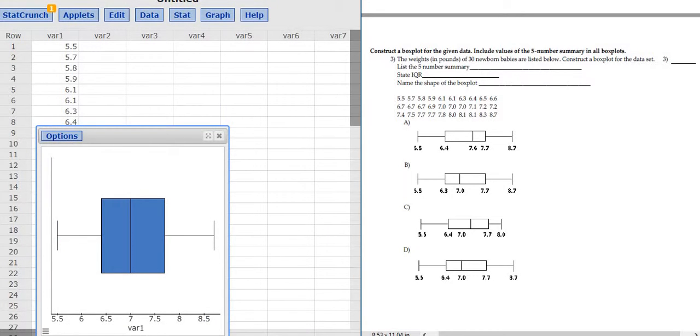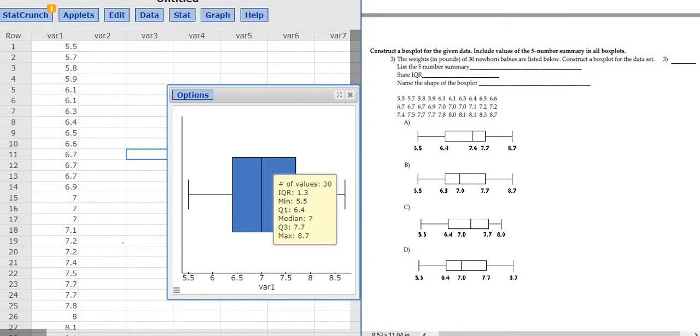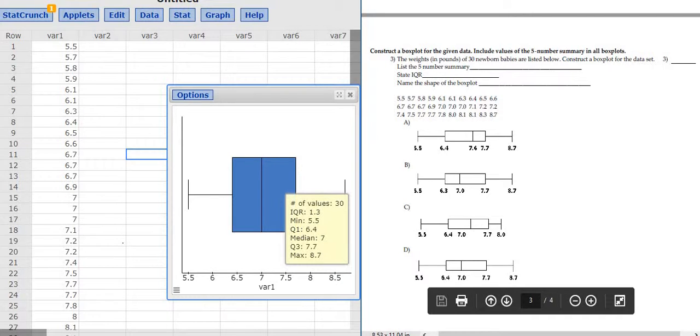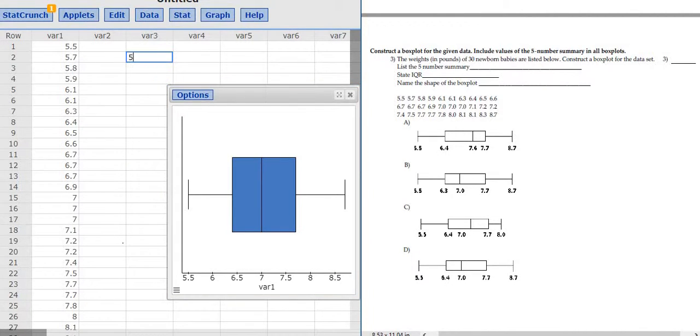All right, and then so we just have to pick the correct box plot. To find the correct box plot, I'm going to identify the five number summary and use that to pick the correct choice here. So you see the 5.5, that's the minimum, the first number in the five number summary. So I'm going to write that down, 5.5. The second number would be 6.4 and then 7, so 6.4, 7. And then 7.7 and 8.7, so 7.7, 8.7.